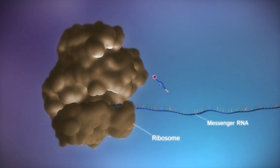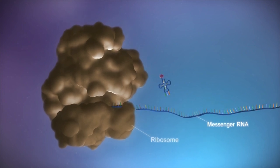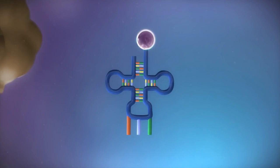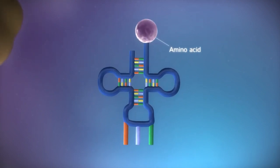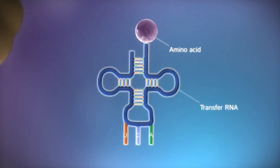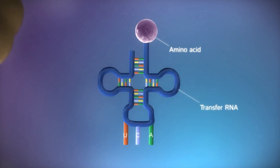The ribosome reads the code in the messenger RNA to produce a chain made up of amino acids. There are 20 different types of amino acid. Transfer RNA molecules carry the amino acids to the ribosome.